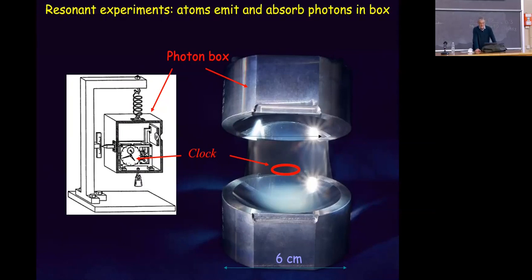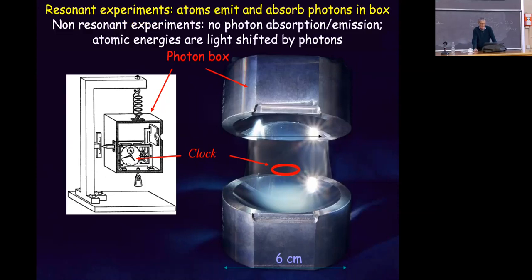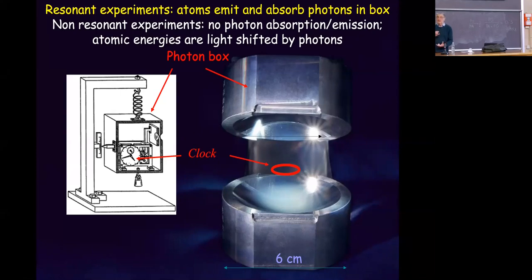There are two kinds of experiments I will describe: first, resonant ones where atoms emit and absorb photons coherently in the box; then non-resonant experiments in which you slightly detune the cavity from the atom and work with light shifts. In order to tune the cavity and the atom into resonance, you can either slightly move the mirrors — which changes the field frequency — or keep the cavity fixed and tune the atomic transition by applying an electric field across the mirrors via the Stark effect. This is much more convenient because you can apply an electric field in a very short time, and so that is the way we proceed.